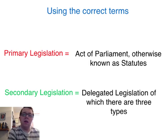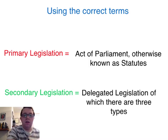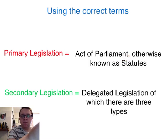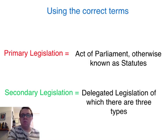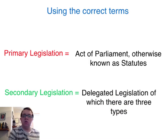For this topic we want to make sure that we show the examiners that we understand the correct terms. When we talk about primary legislation, this means Acts of Parliament, otherwise known as statutes, that have been created by Parliament and no one else. For this topic though, delegated legislation is where Parliament has transferred some of that law-making power to another — whatever legislation that the Privy Council, a Government Minister or a local authority creates will in fact be secondary legislation, and that is what we're talking about for this topic.